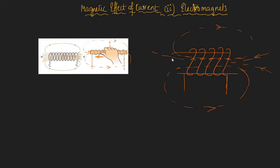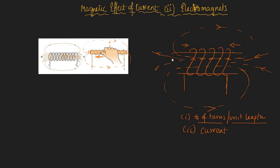The magnetic field lines inside the solenoid depend upon many things. One factor is the number of turns per unit length — that is, how tightly packed the coils are. The second factor is the current I that is passed through. More the current, the greater the magnetic field strength. Similarly, more turns per unit length means your B would be more.